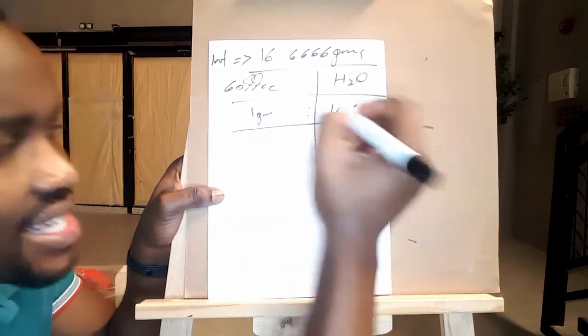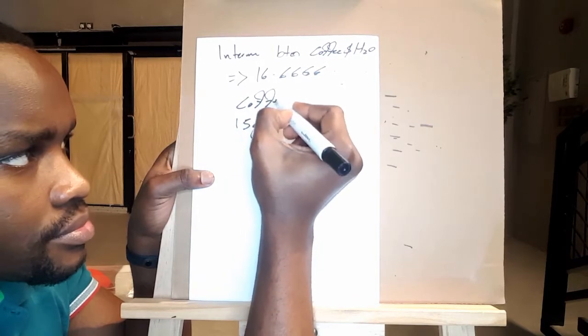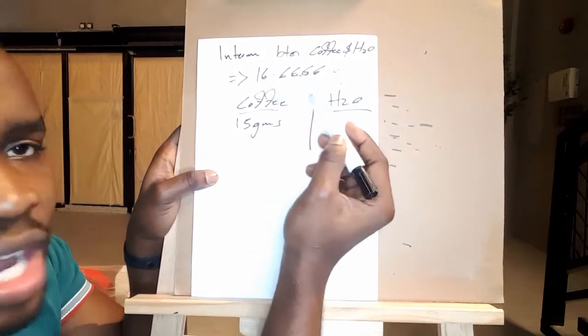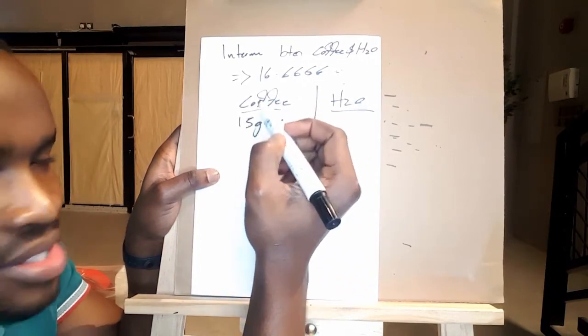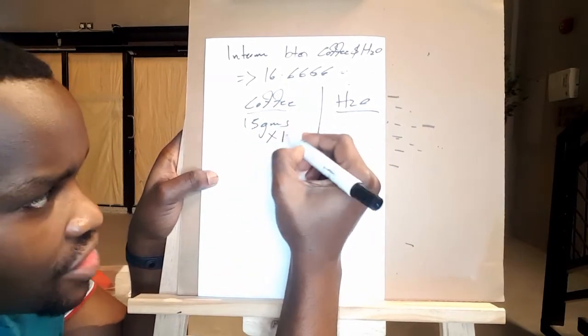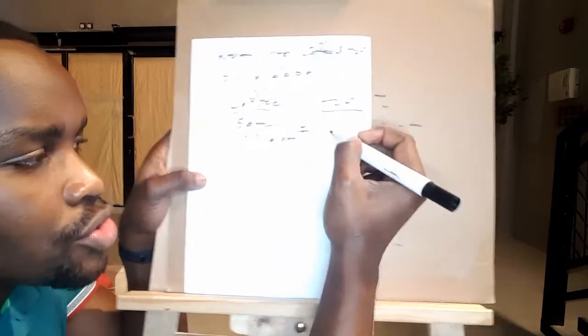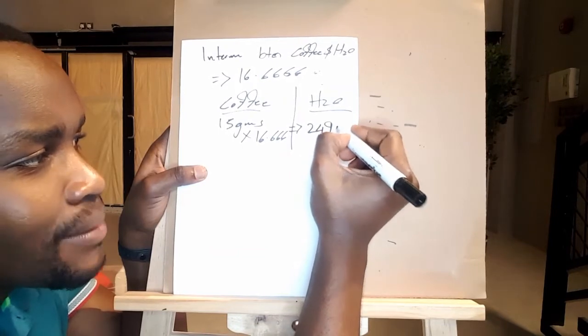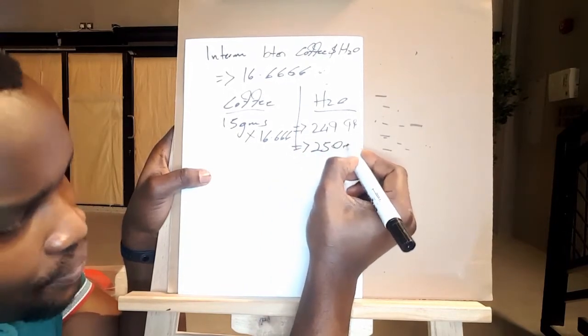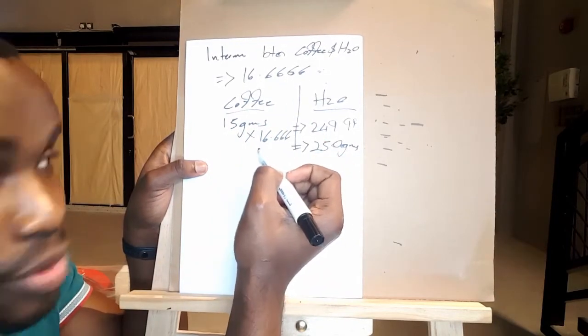This is where the ratio that you've been asking for comes from. If I have 15 grams of coffee, how much water do I need to brew a cup? This is where our intermediate is going to come in to rescue our 15 grams of coffee. We are going to get this 16.6666 and multiply it with the 15 grams. So we carried the intermediate to multiply it with the 15 grams. And the answer here we are going to get is 249.9999. And if we round off this figure, it's going to equate us to 250 grams of water.